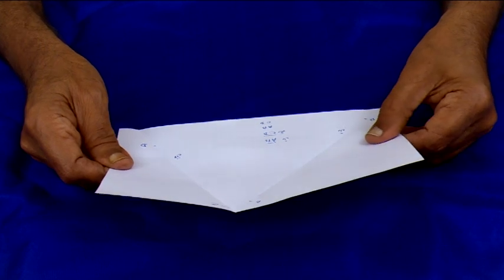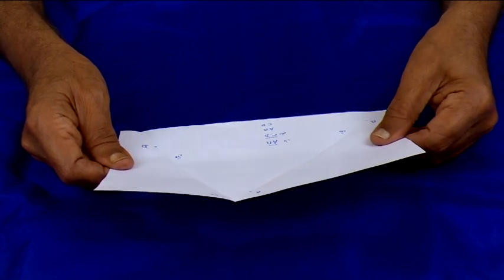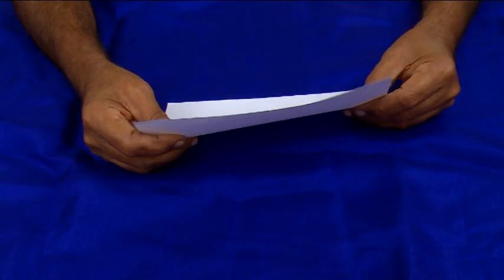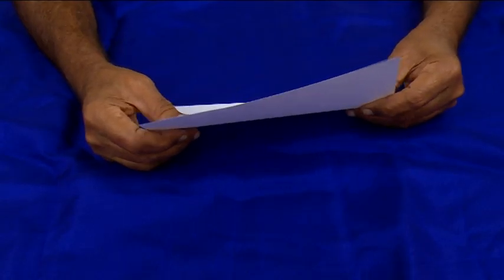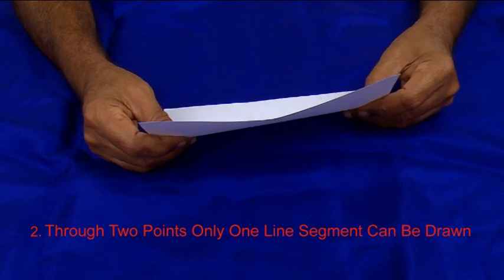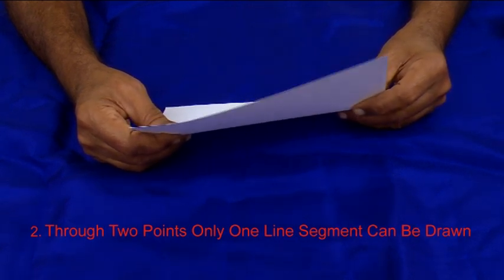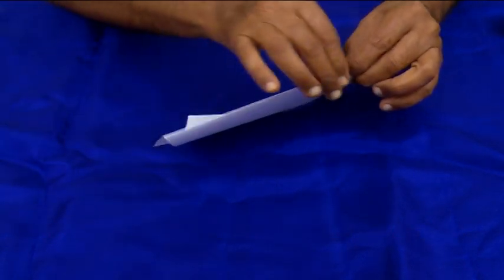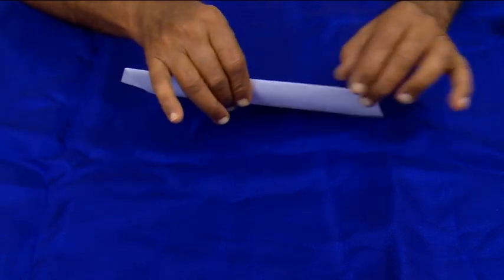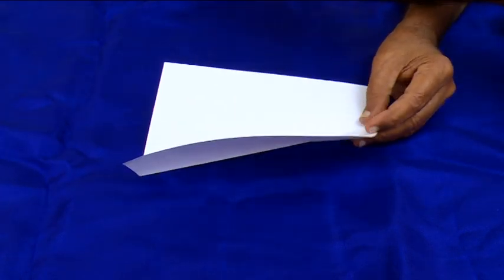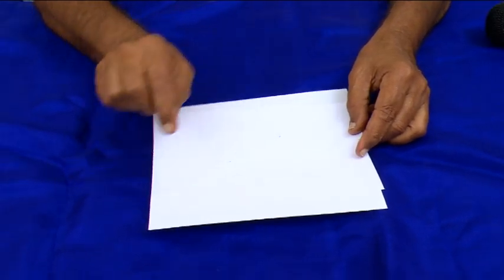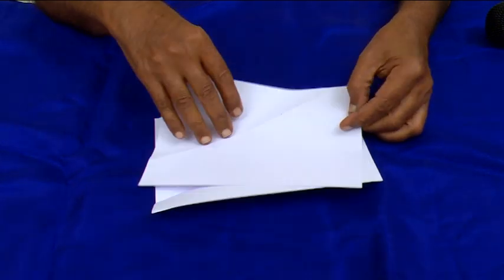If there is no bar above the letters, they are called metric measures — so we are talking only about the measurement of AB and the measurement of CD. Number two: given two points, only one line segment can be drawn.